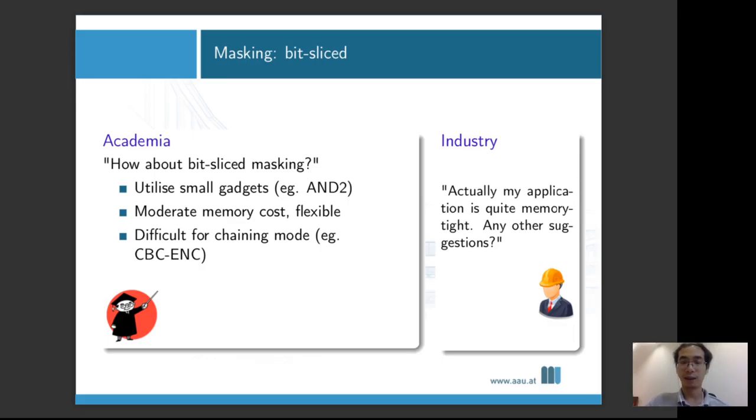We know there are a lot of applications which are quite memory tight. So in that case, our industry engineer is asking for any other sensible solutions. We also have bit slice masking. If you're using bit slice masking, you are just constructing smaller secure gadgets like a 2-bit AND gate, which is a small piece of code operating on software but providing exactly the same functionality as a hardware AND gate with security property.